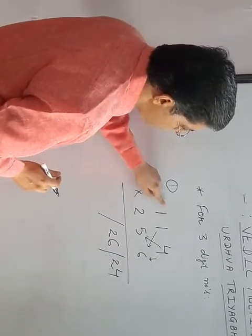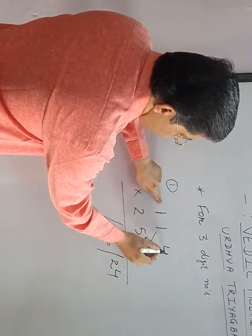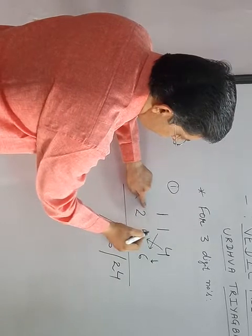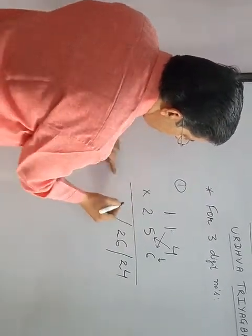Now, then 3 digits we have. 1 into 6 is 6. 4 into 2 is 8. 8 plus 6 is 14. And 1 times 5 is 5. 14 plus 5 is 19.